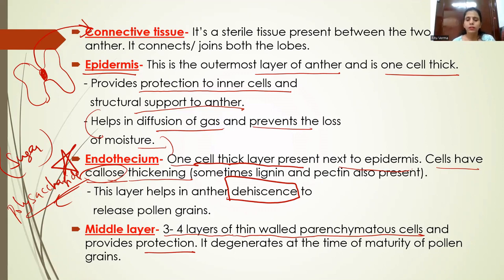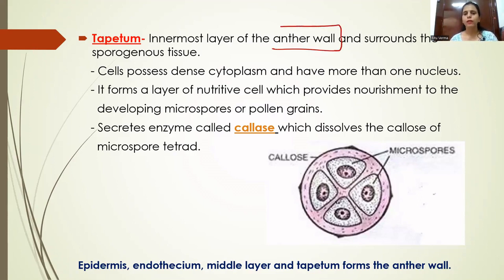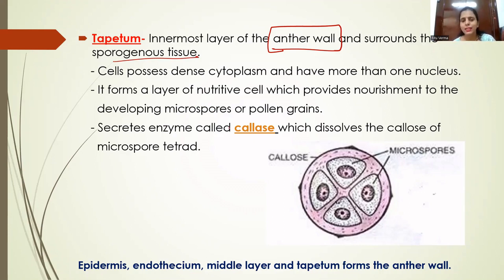The tapetum is the innermost layer of the anther wall, enclosing the sporogenous tissue. The anther wall consists of four layers: epidermis, endothecium, middle layer, and tapetum. The function of the entire anther wall is to provide protection and nourishment to developing pollen grains. The cells of the tapetum have very dense cytoplasm and are generally multinucleate — at least two nuclei are present in each tapetal cell.